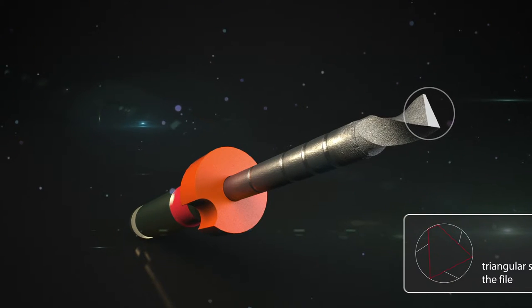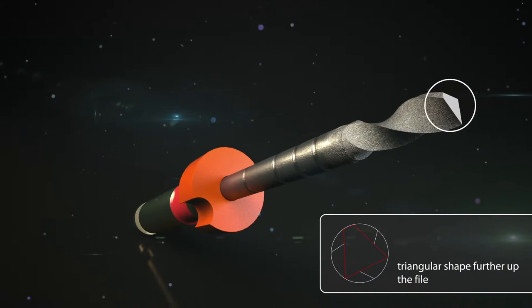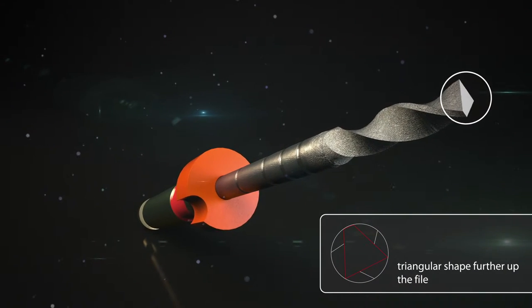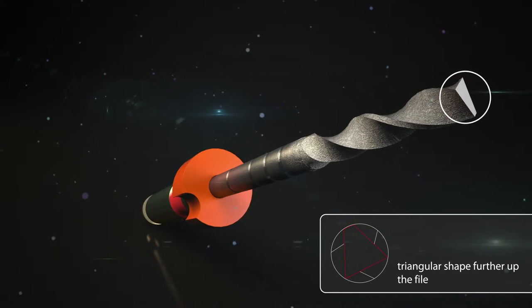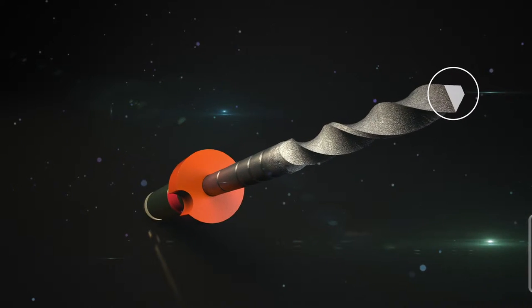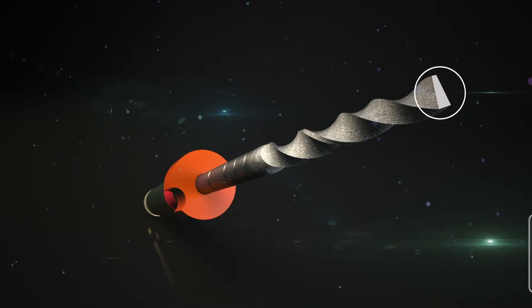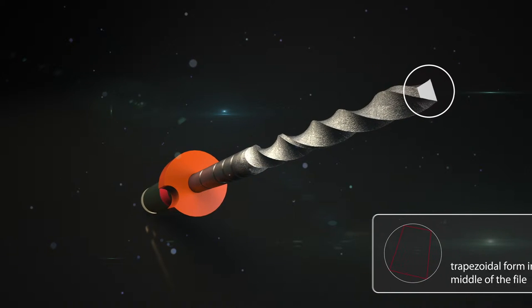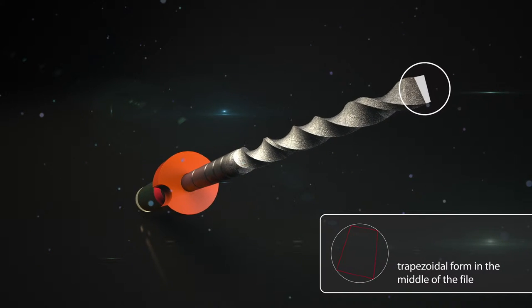The innovative EDM process enables the internal cross-section of the file to vary extraordinarily. The almost triangular cross-section at the lower end of the HyFlex EDM file changes to a trapezoidal form until it approaches an almost rectangular cross-section at the tip.